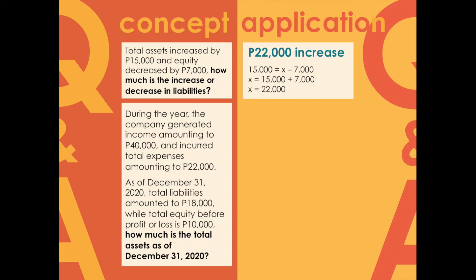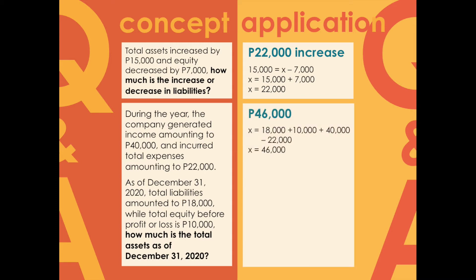Problem five: during the year the company generated income of 40,000 pesos and incurred total expenses of 22,000 pesos. As of December 31, 2020, total liabilities amounted to 18,000 pesos and total equity before profit or loss is 10,000. How much is total assets? Using the expanded equation: Assets equals 18,000 plus 10,000 plus 40,000 minus 22,000. Solving for x, we get total assets of 46,000 pesos.